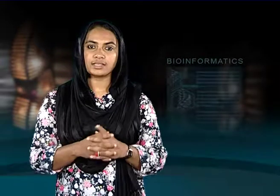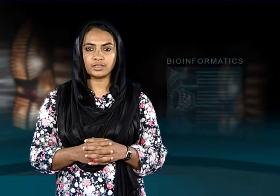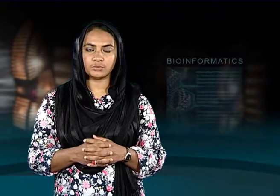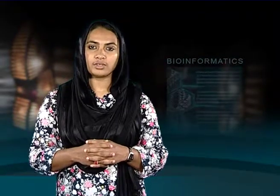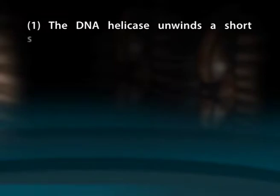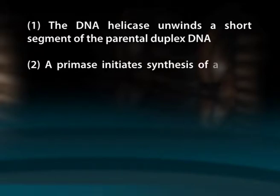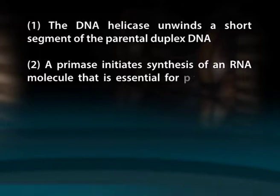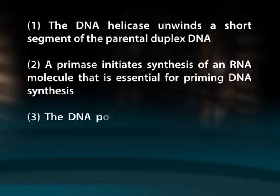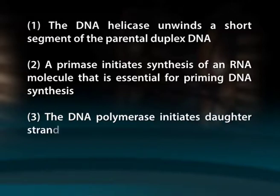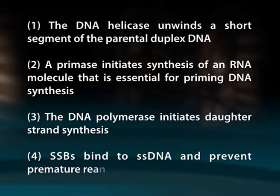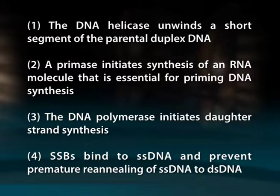The origin of replication forms a Y-shape called a replication fork. Single-stranded binding proteins, SSBs, work with helicase to maintain the parental DNA helix unwound. The replication fork consists of four components: first, the DNA helix unwinds; next, a primase initiates synthesis of an RNA molecule essential for priming DNA synthesis; third, DNA polymerase initiates daughter strand synthesis; and last, SSBs bind to single-stranded DNA and prevent premature re-annealing.